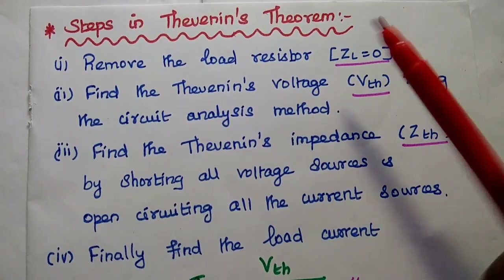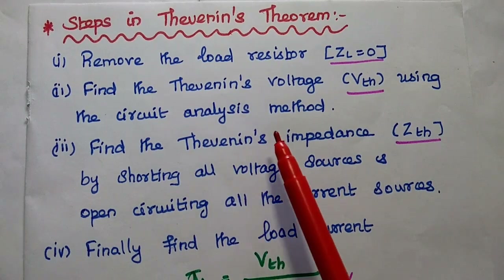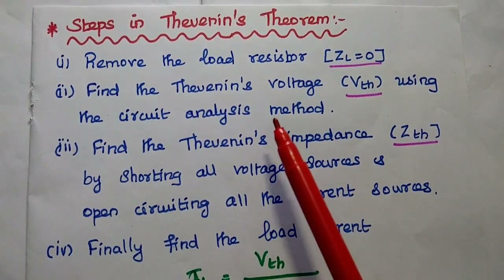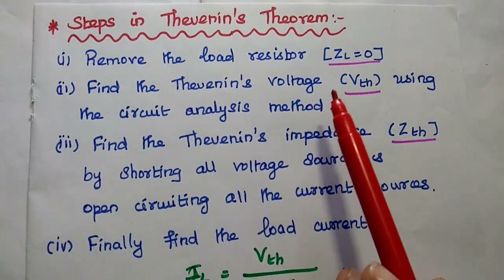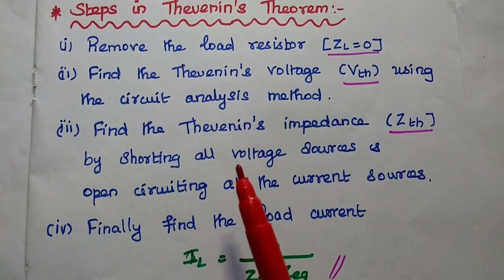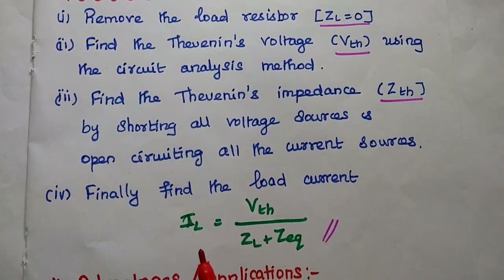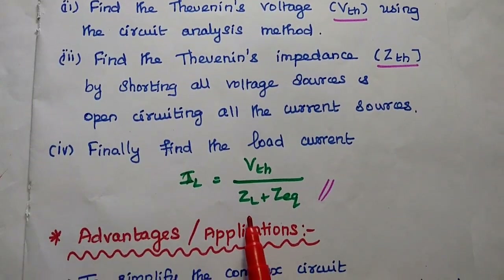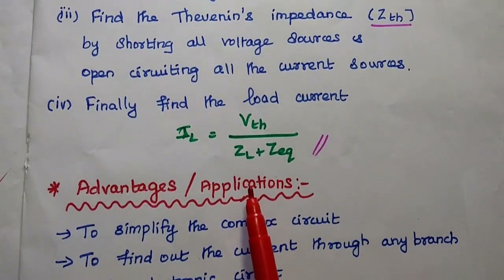The steps in Thevenin's theorem: The first step is to remove the load resistor in the given circuit, then find the Thevenin's voltage using circuit analysis methods such as KCL, KVL, or mesh analysis. Next, find the Thevenin's impedance by short-circuiting all the voltage sources and open-circuiting all the current sources. Finally, find the load current IL, which equals VTH divided by the sum of the load impedance and the equivalent impedance.